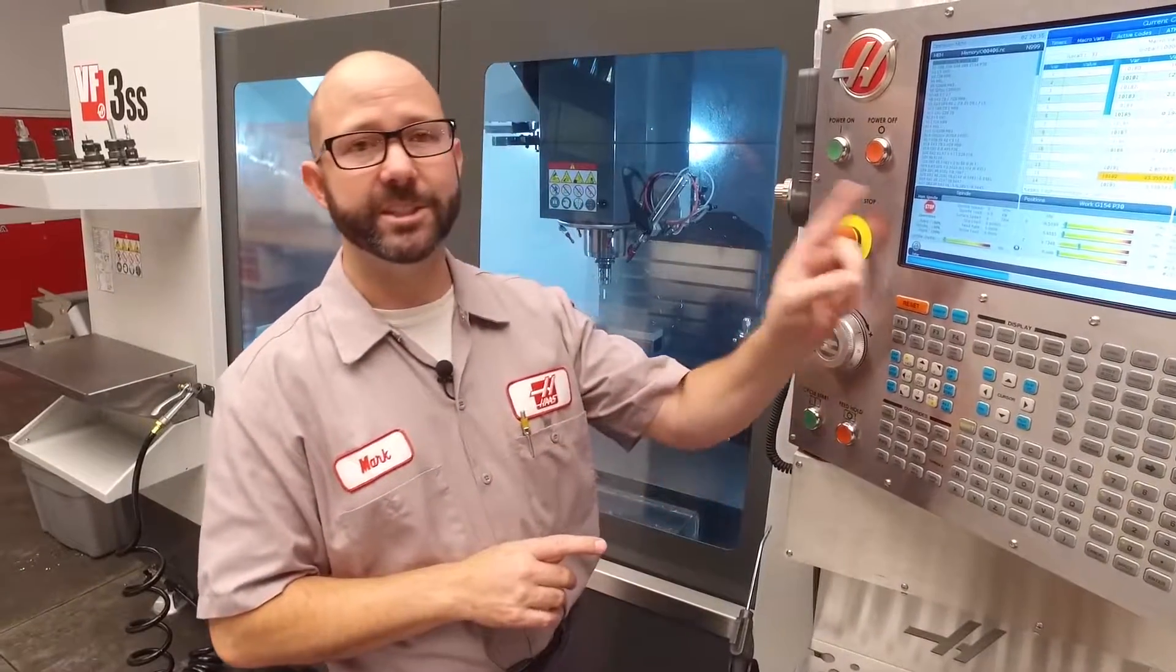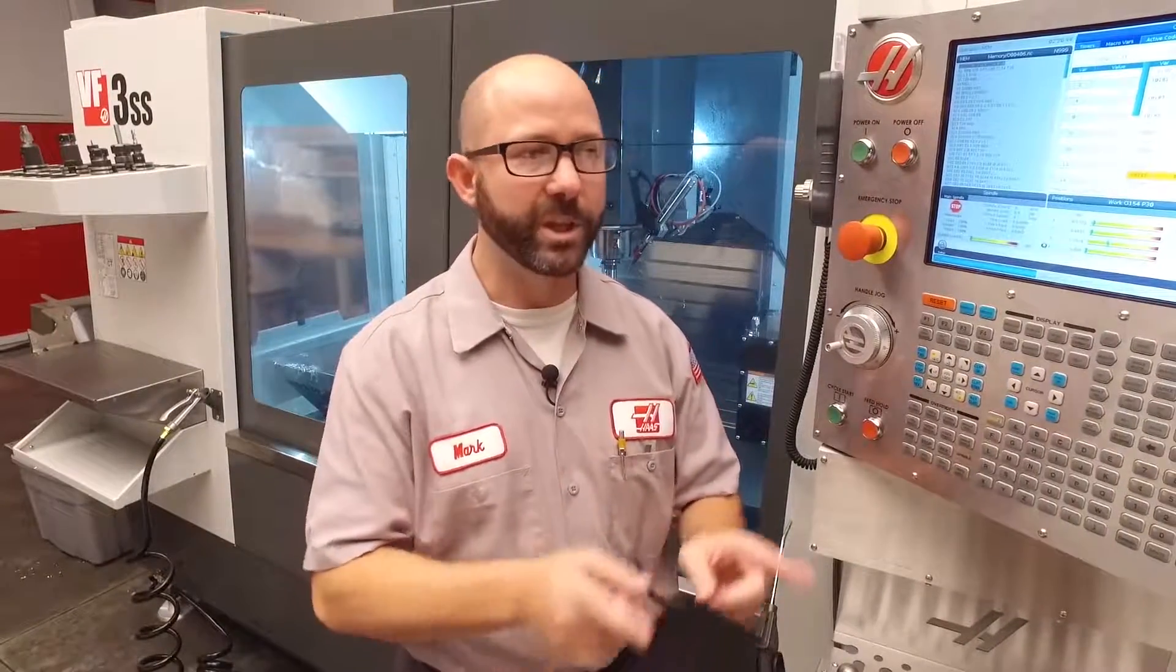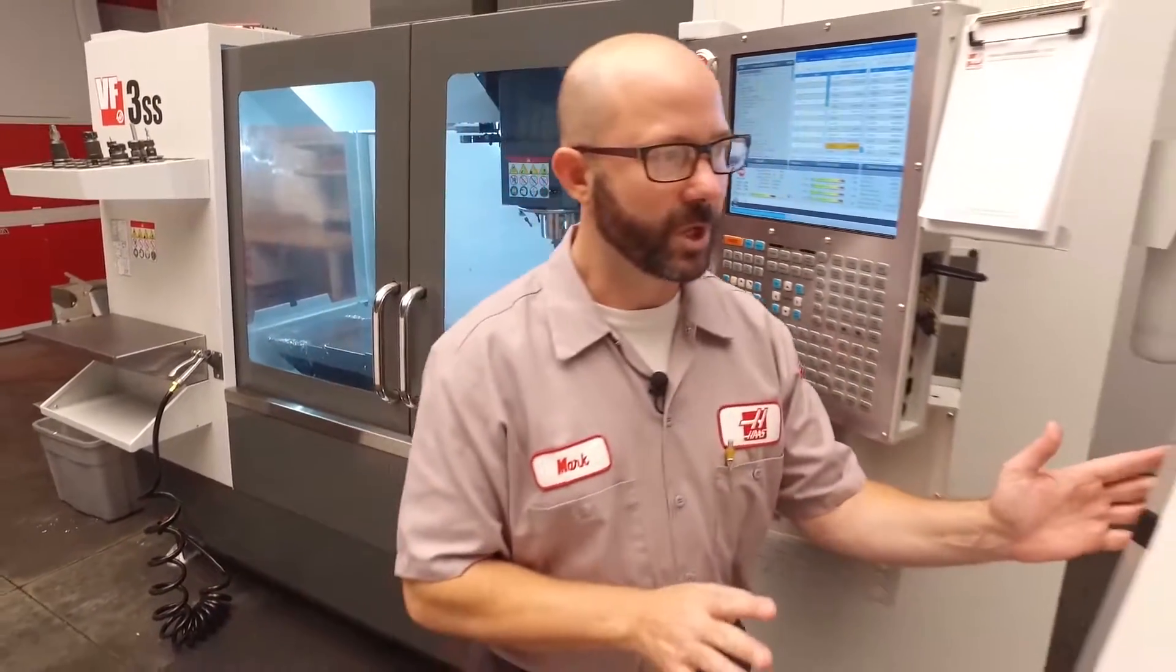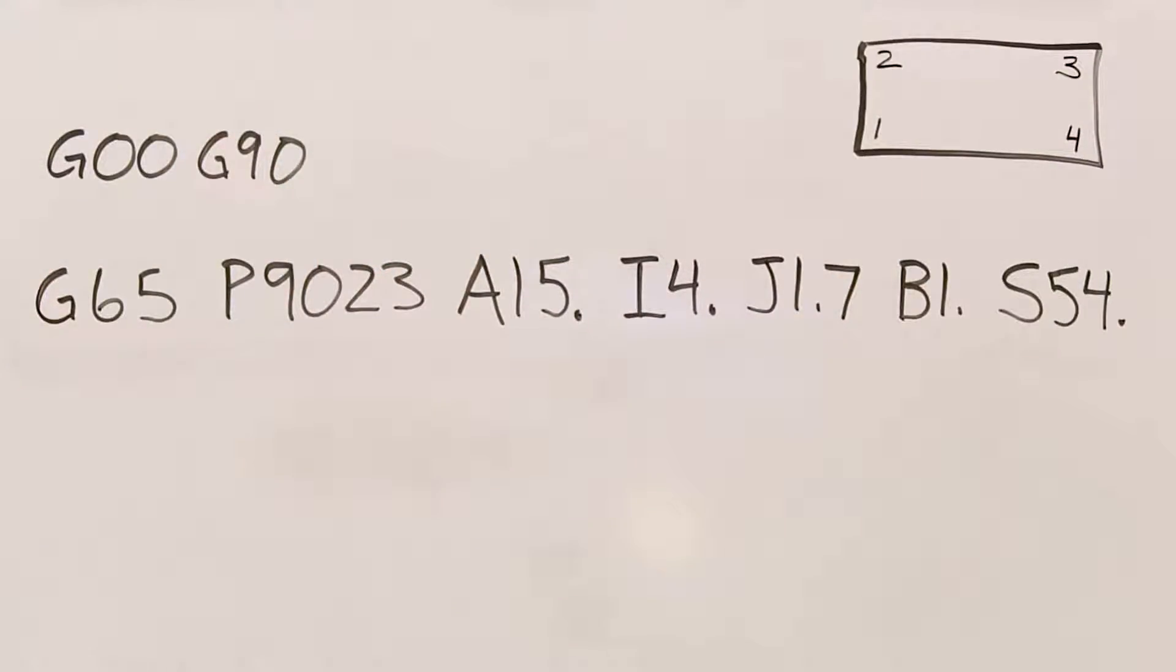But, what if you don't have the template that we have on our next-gen control? Well, this shouldn't be a problem. If you've got a Renishaw probe on a Haas mill, we can show you how to probe this angle. So here's the code that we're gonna use. You already have the correct macros on your machine.